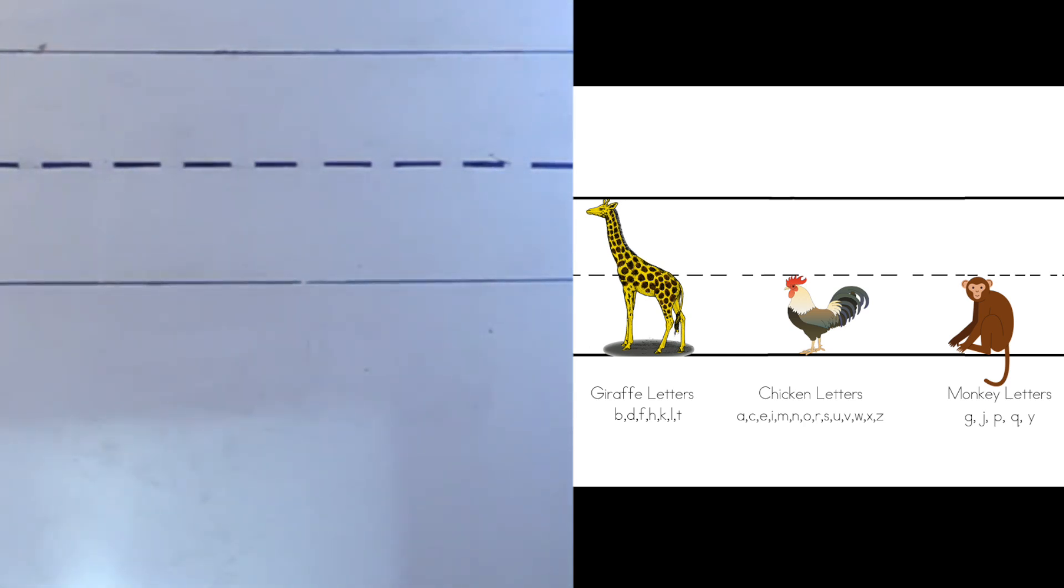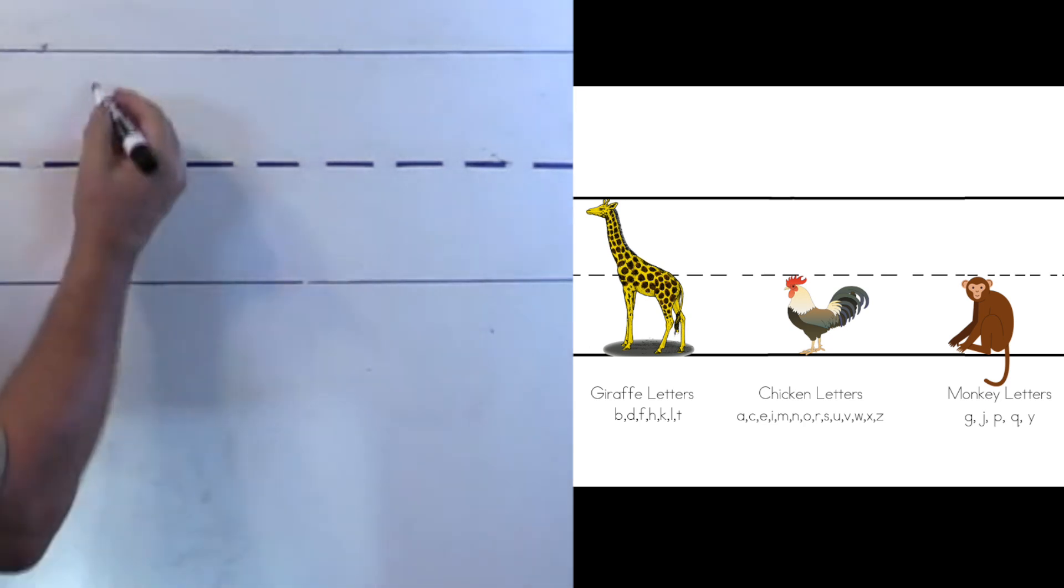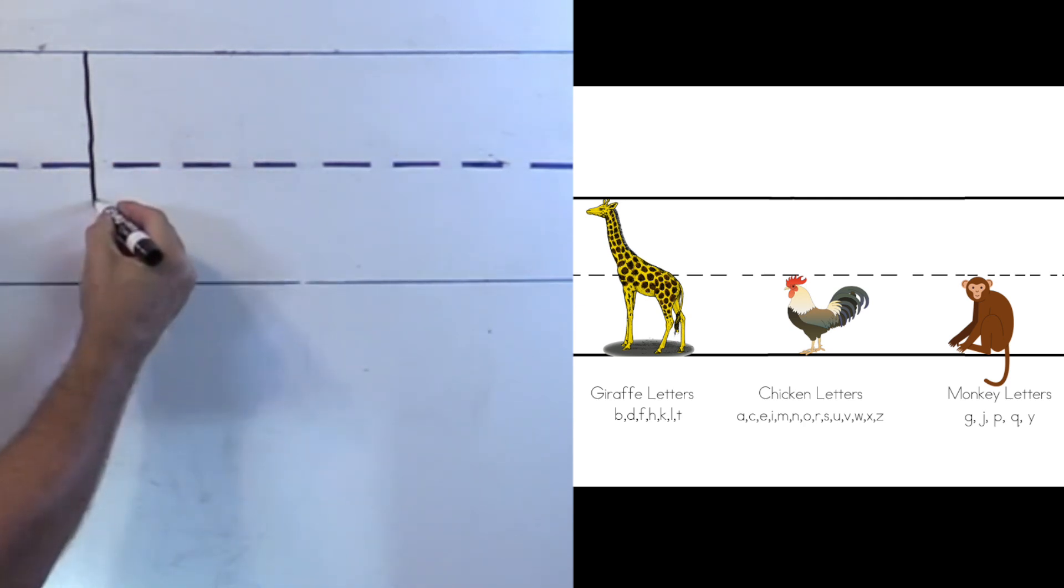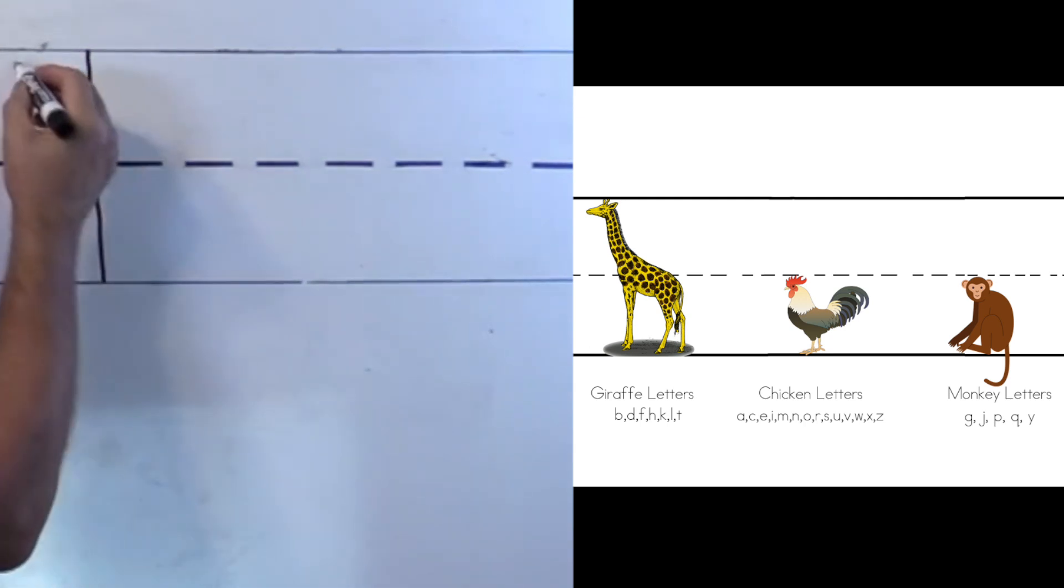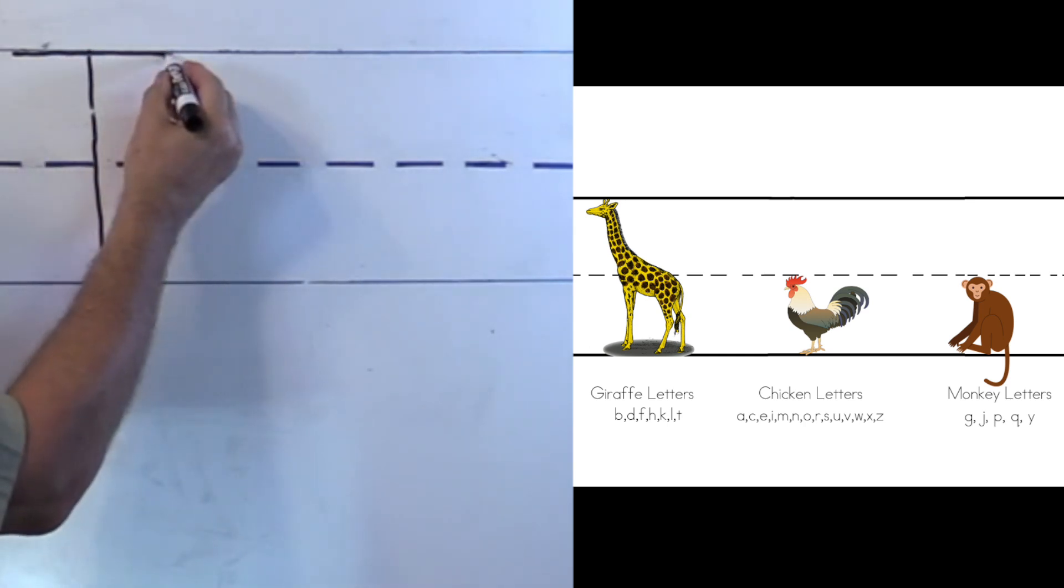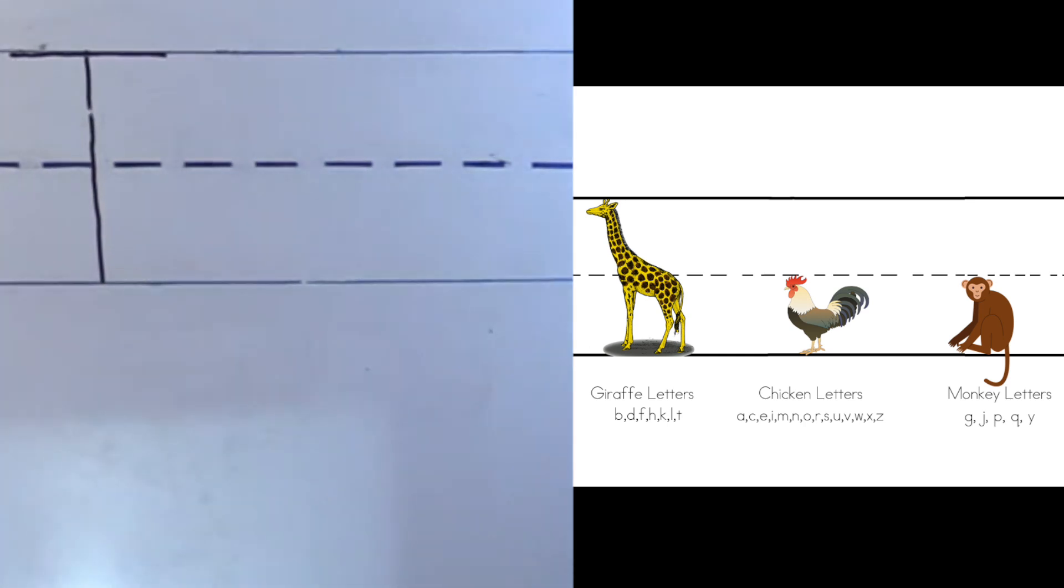Okay, get your pencil ready. Here we go. So remember, we start at the top on the uppercase T and we go straight down. Are you doing it with me? Take your time. Go all the way to the bottom and then we stop. And then I come back to the top to put my top on the T. Go all the way across and there is my uppercase T.